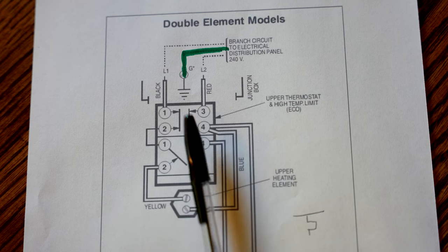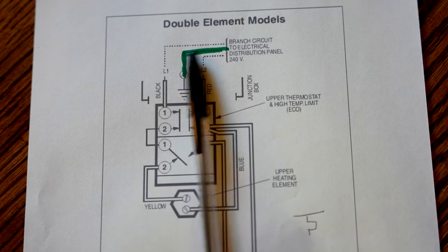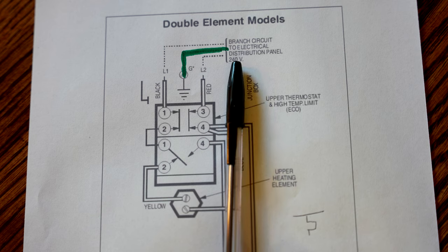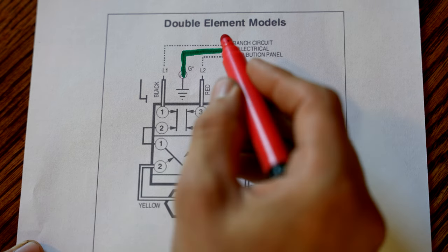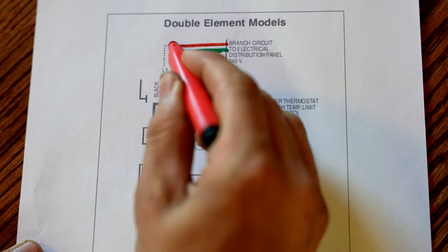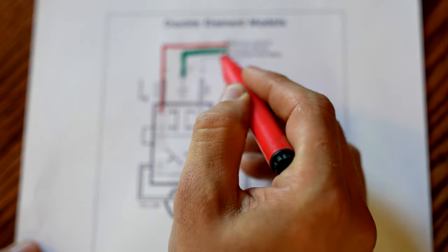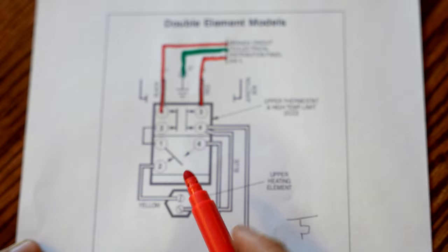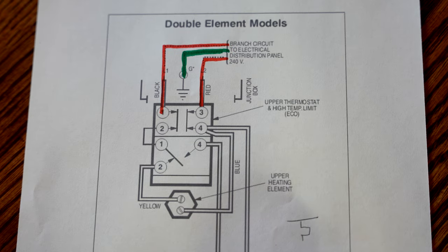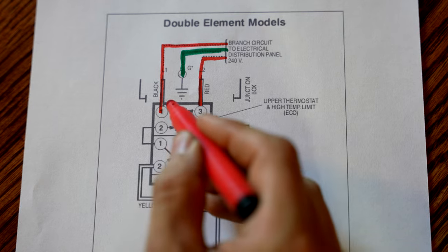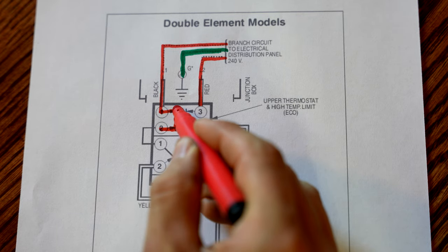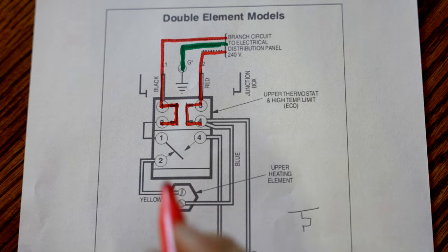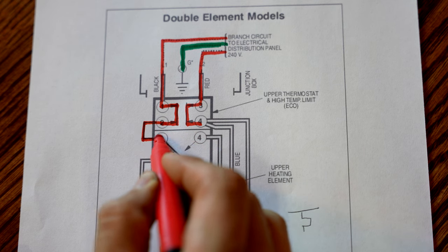There are three wires that go to the water heater from the breaker panel in your house. One of them is going to be the ground. I colored this one green. And the other two are going to be your hot legs, the 240 volts. And I'm going to go ahead and color the hot legs red. So power comes in from the breaker panel into your water heater, and it goes to the upper thermostat and high limit switch first. And if the water heater is operating normally, and this is not tripped, power will go through here, and go into the next set of terminals. And from terminals 2 and 4, the power continues like this.